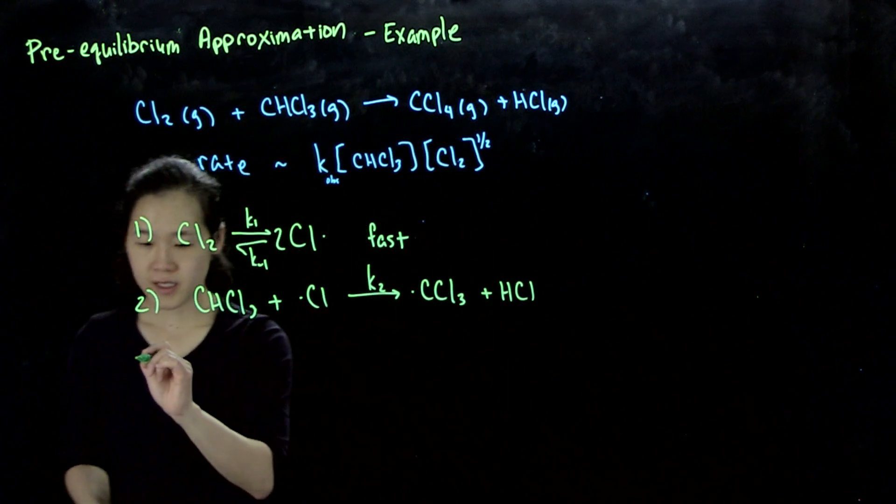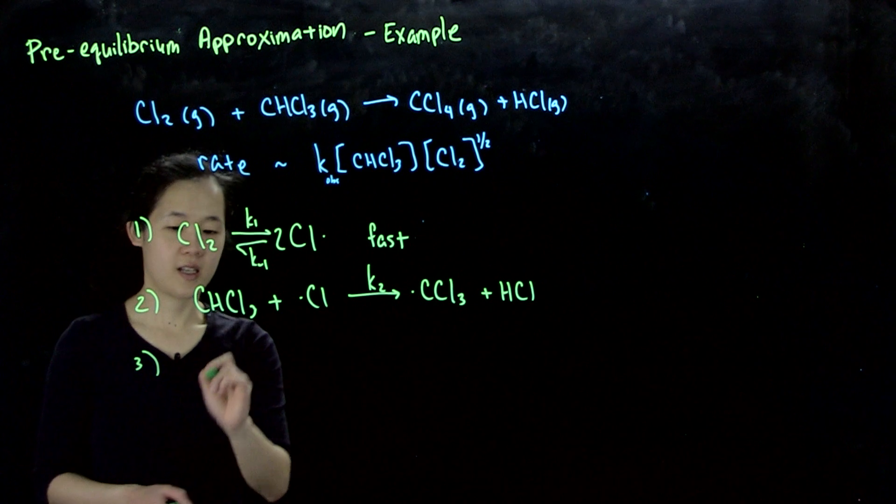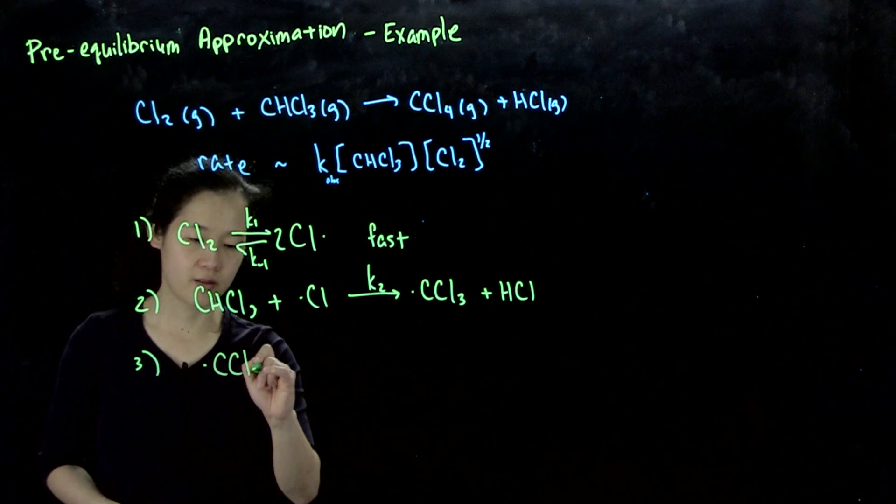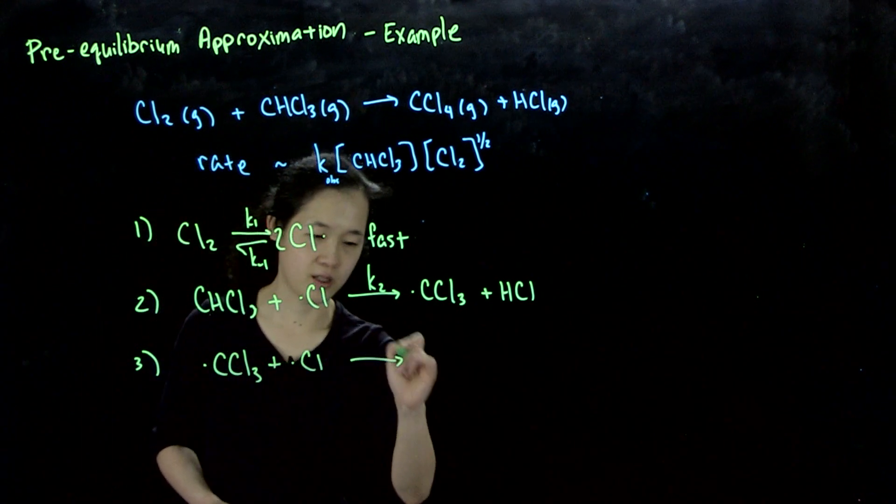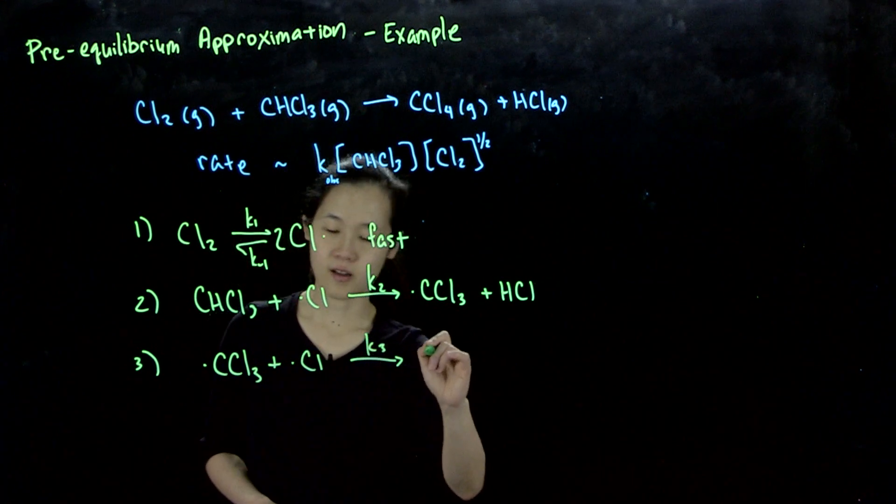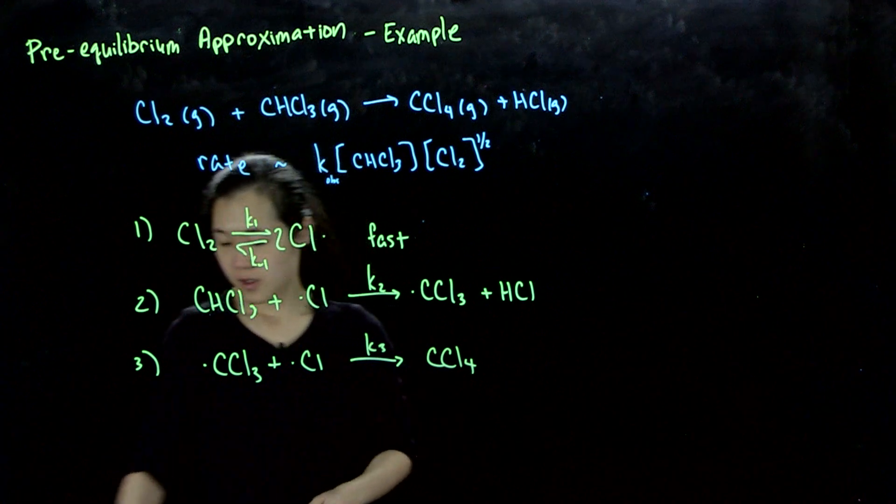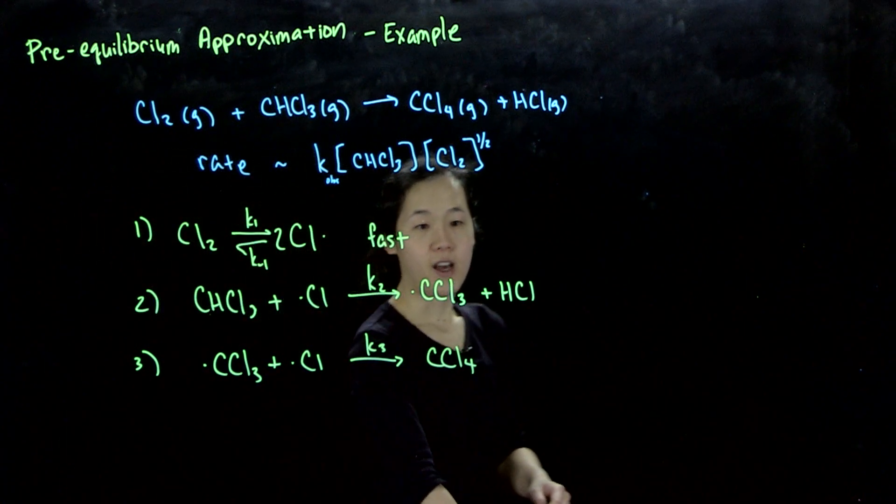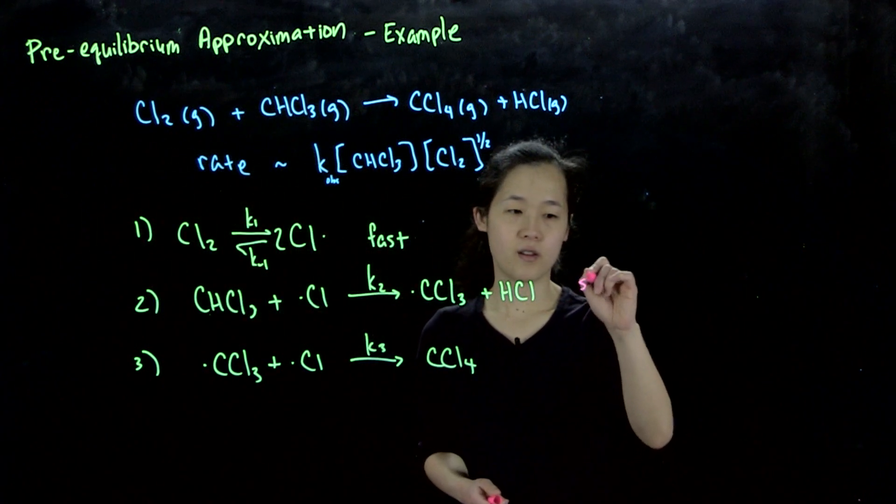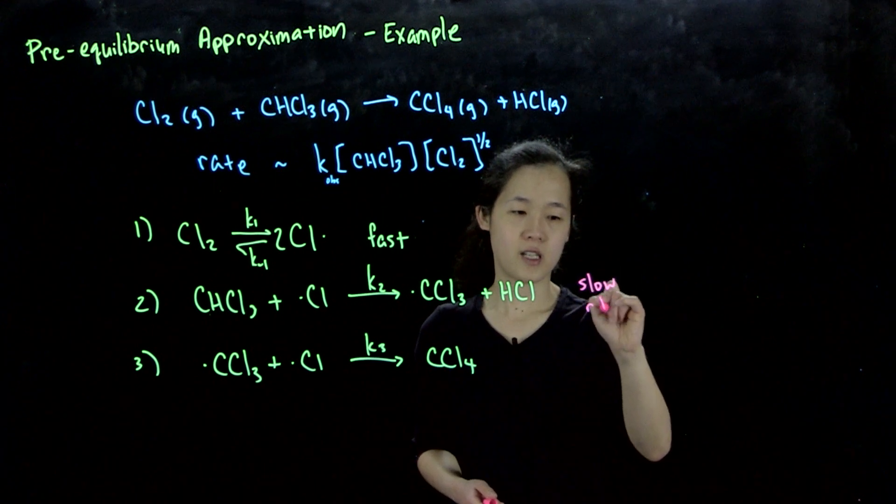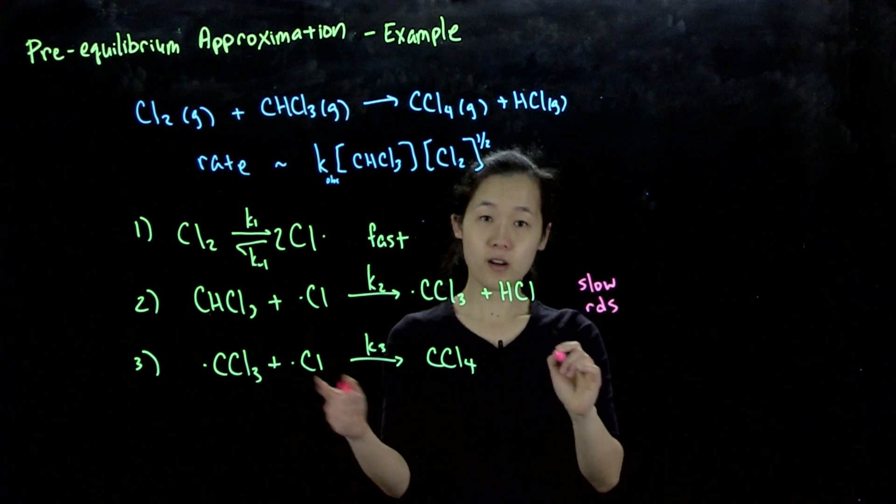The third step is this carbon-centered radical plus another chlorine atom, k₃, giving our product. If the first step was fast, let's say the second step is slow - this is our rate-determining step. And then this third step is fast.